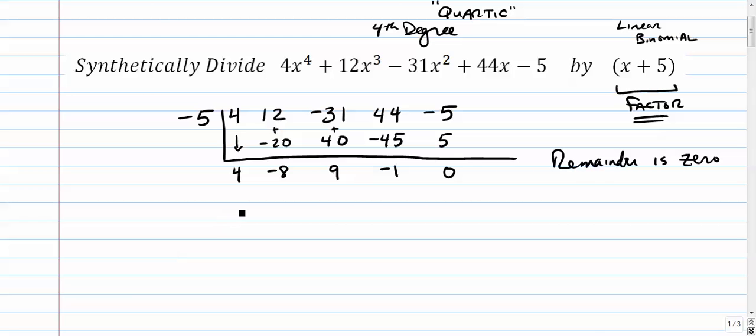All right, so your answer is, let's see, this is your quotient. It's going to be 4x. And then since we started with a fourth degree and we divided it by a linear term, your new, your quotient is actually going to be a cubic.